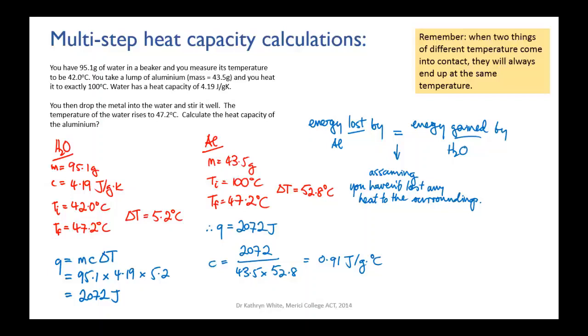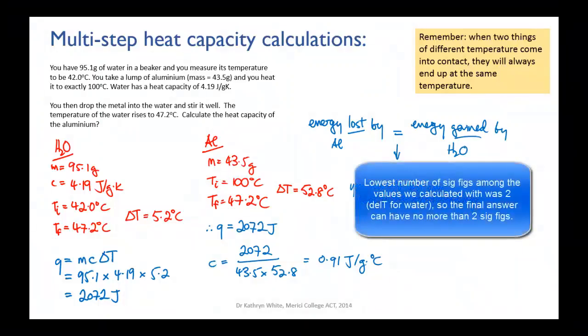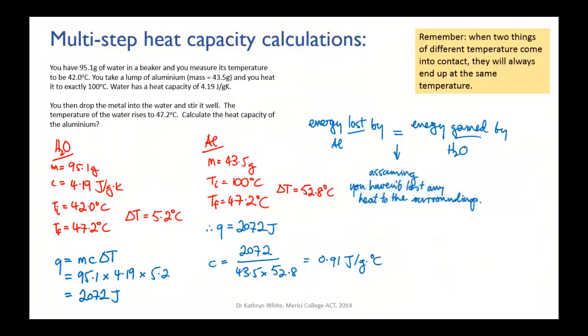So that means that our final one here is going to be 2 as well. We had 3 for the mass of the aluminum, 3 for the initial temperature and final temperature, 3 for ΔT for aluminum. So 2 sig figs is what we're after, and if you check that out on the web, you'll find that that is in fact the heat capacity of aluminum.